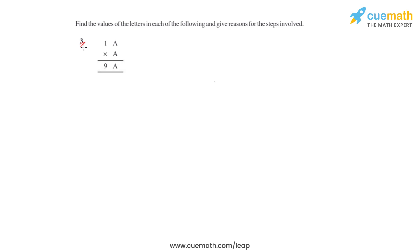In the third question of this exercise, we have been given a multiplication product containing the letter 'a'. We have to keep in mind that this letter represents a digit. We'll have to find the value of this letter and give reasons for the steps involved.